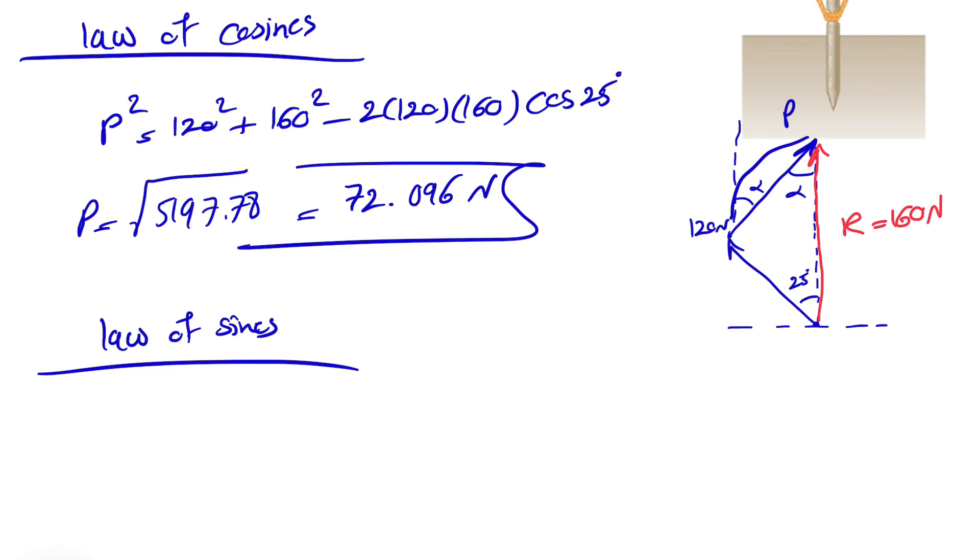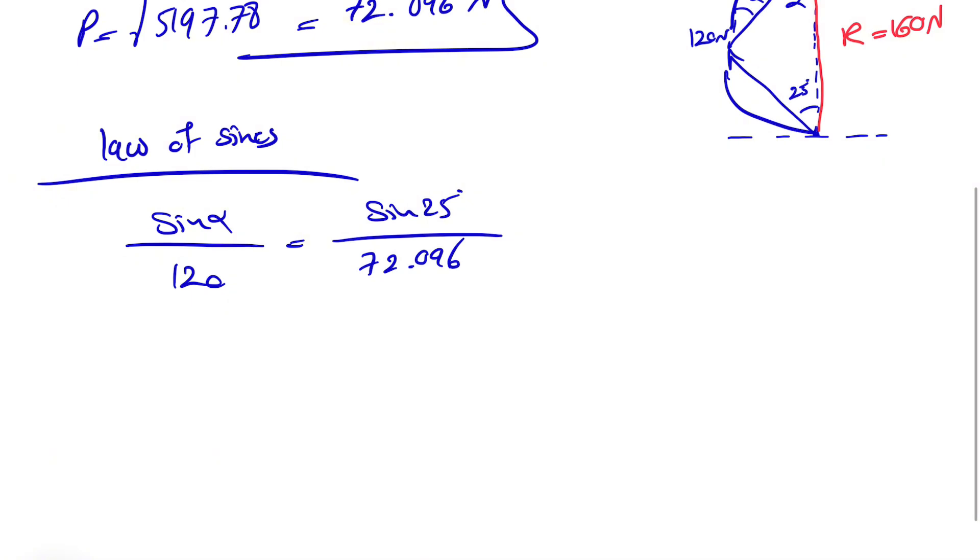So we are interested in sine of alpha. Sine of alpha, since we are looking for alpha over the front side, 120 is equal to sine of 25, since we already have the angle, over what we found for P, 72.096.